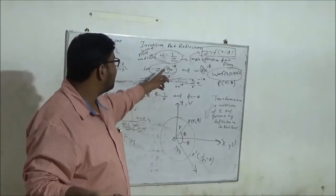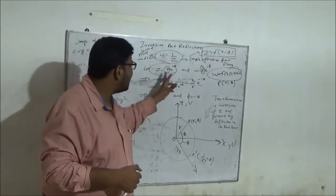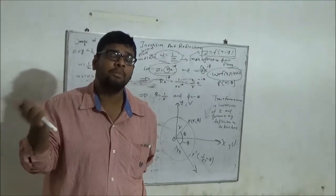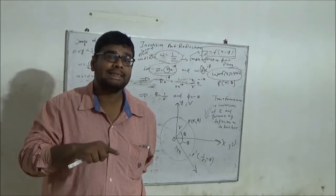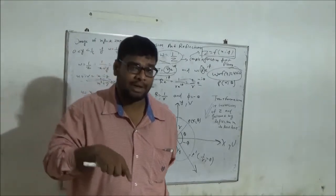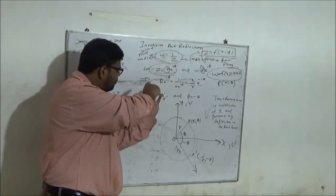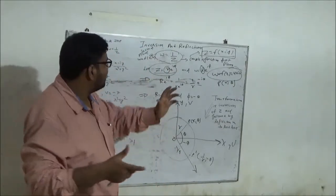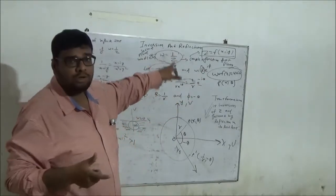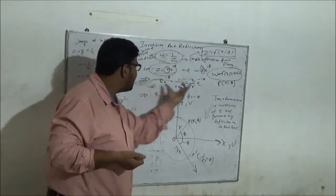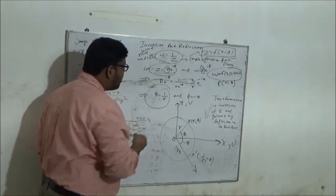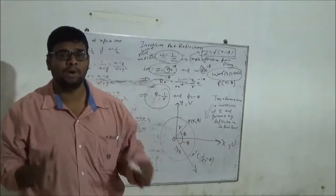Here θ is the angle in the z-plane and φ is the angle in the w-plane. Small r and capital R are the corresponding distances of the points P and P' from the origins of the x-y axis and u-v axis respectively. When we compare both relations and apply w = 1/z using polar form, we get R = 1/r and φ = −θ. This is a very important relation.